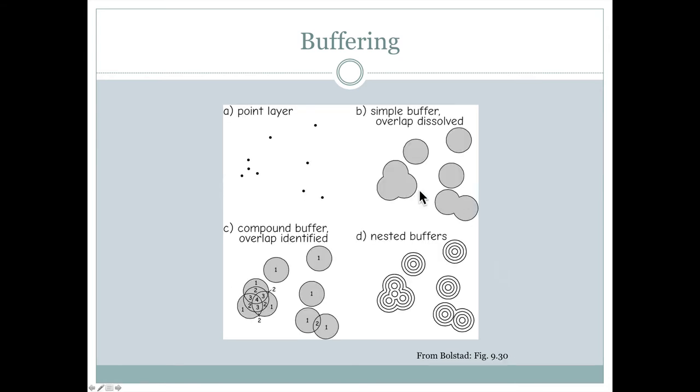If we start with the point layer and we do buffering, the default is to get buffers that look like this. If they're far enough away from each other, they're circles. Here, they would be overlapping circles, but all one polygon area that is traced out like this.